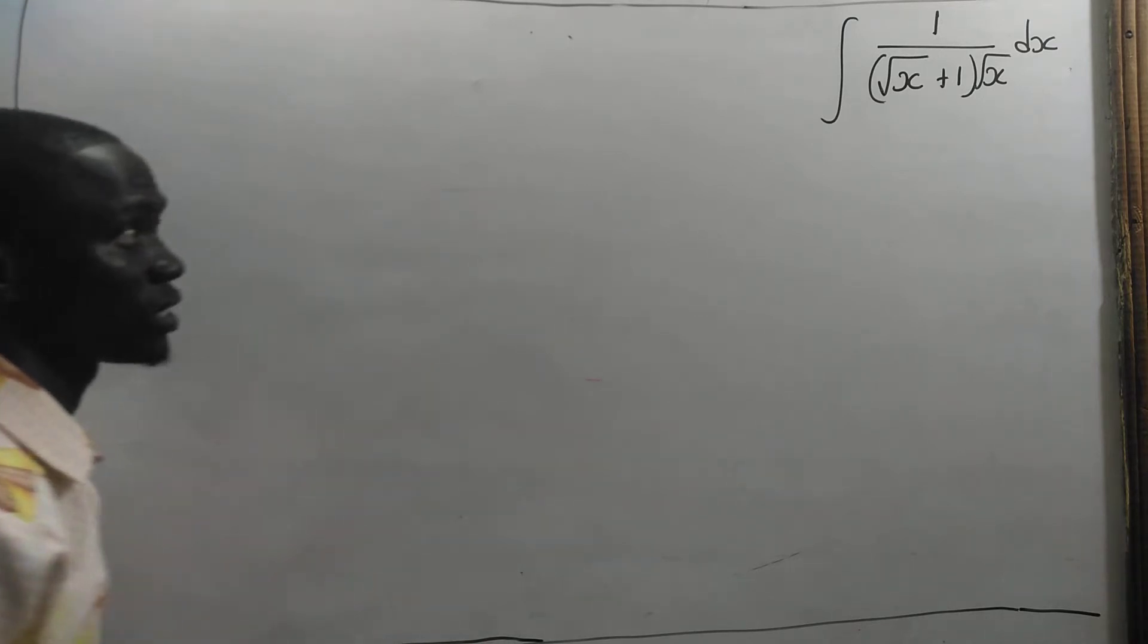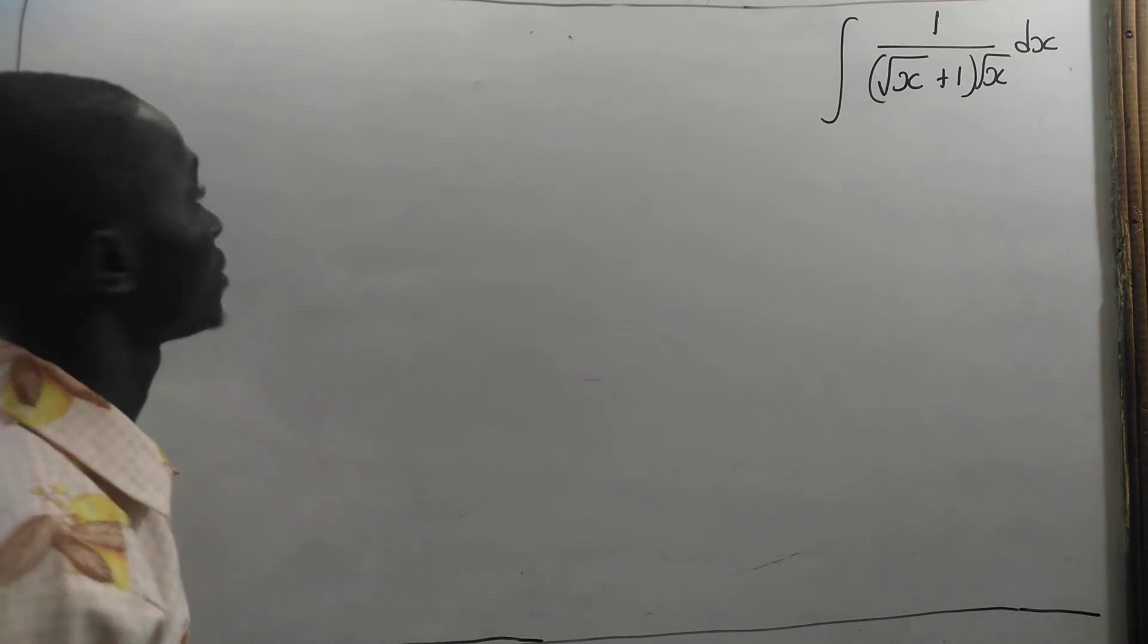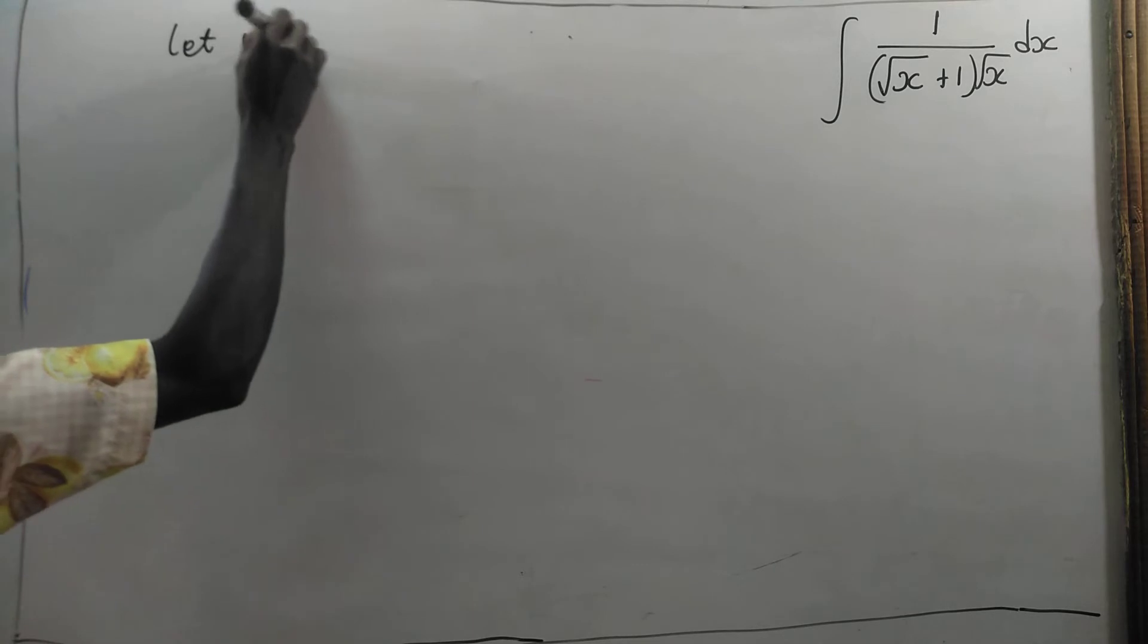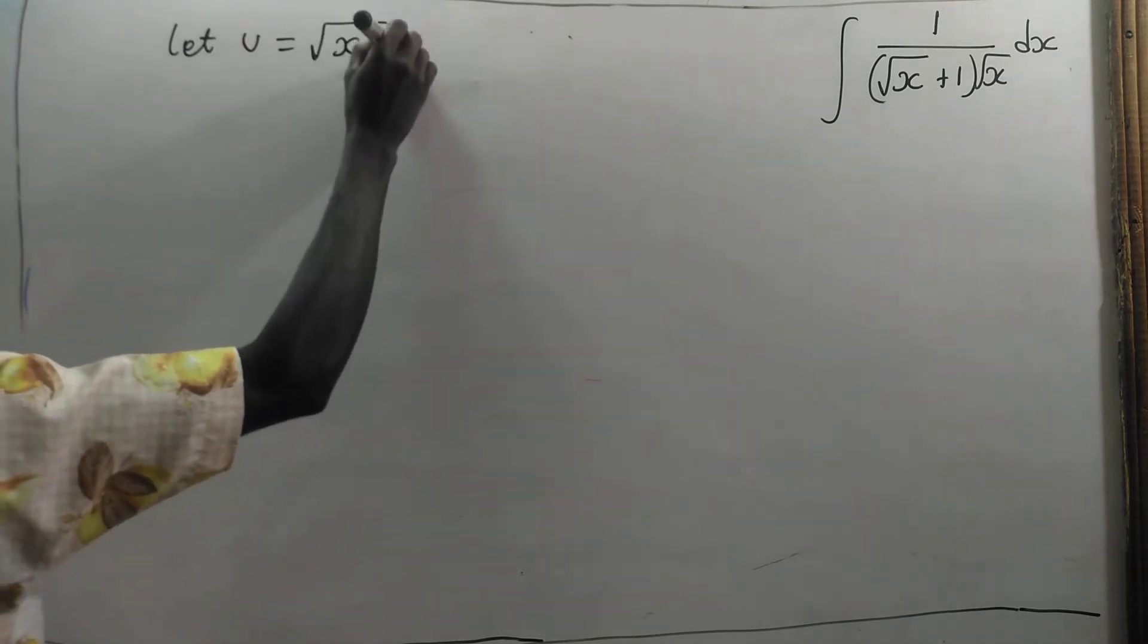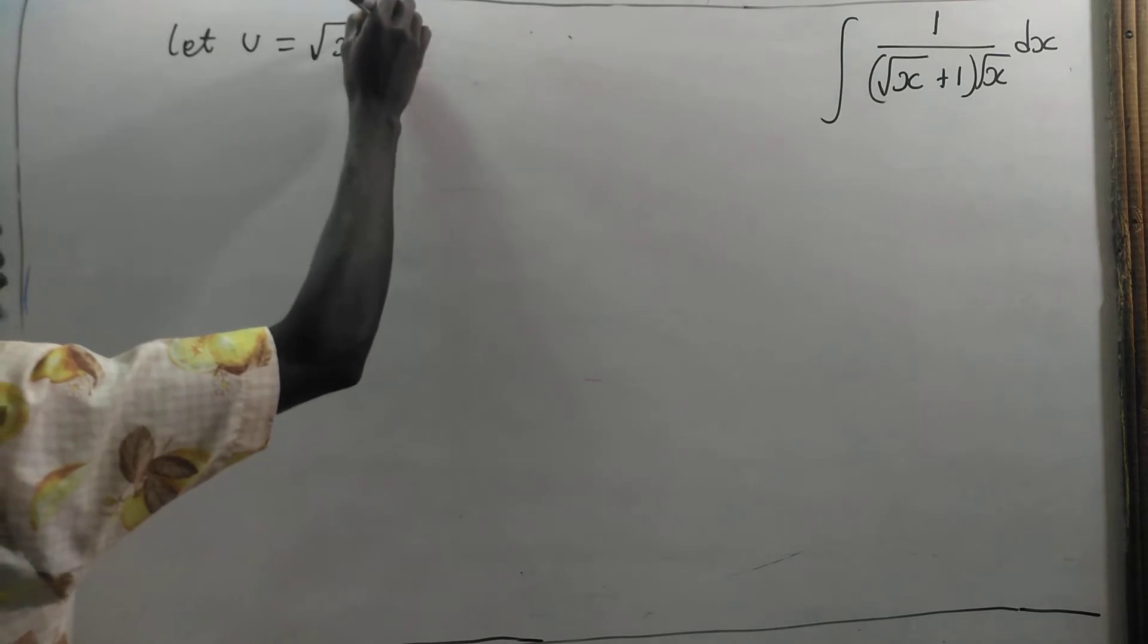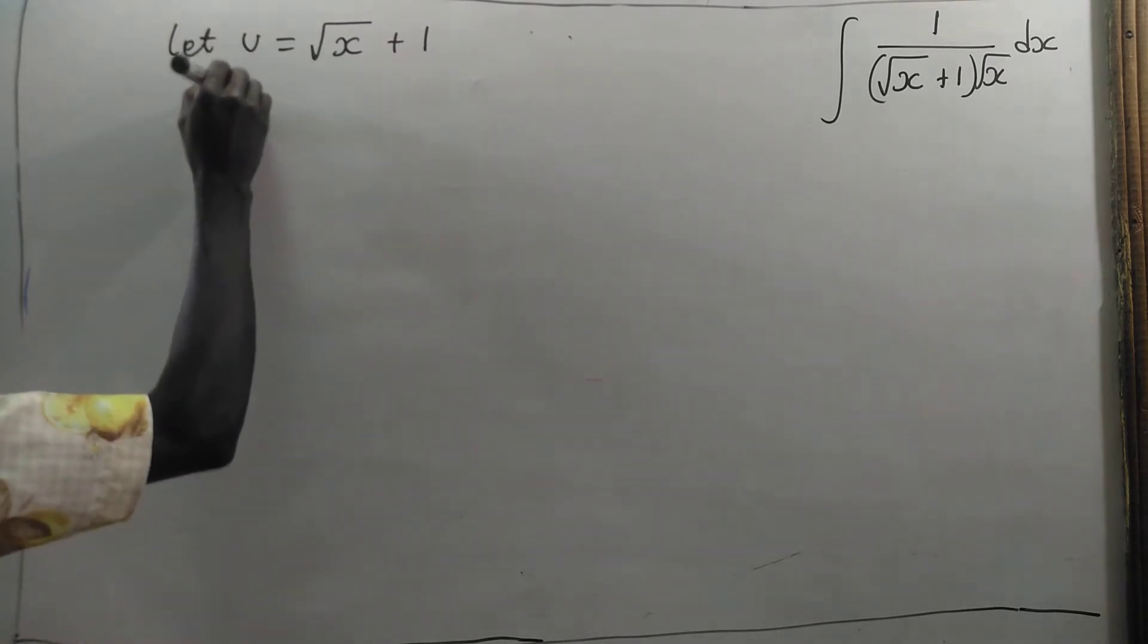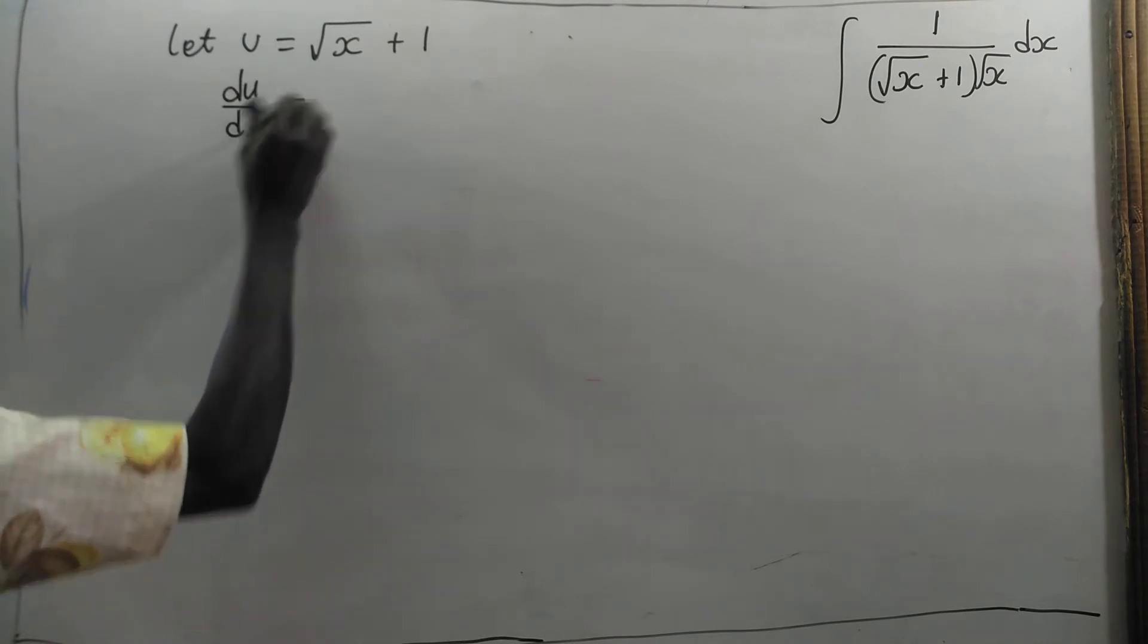So what are we going to substitute? Let's say that we are going to let u to be equal to the square root of x plus 1. Then let's put the differentiation here. We are going to have the derivative of u with respect to x.